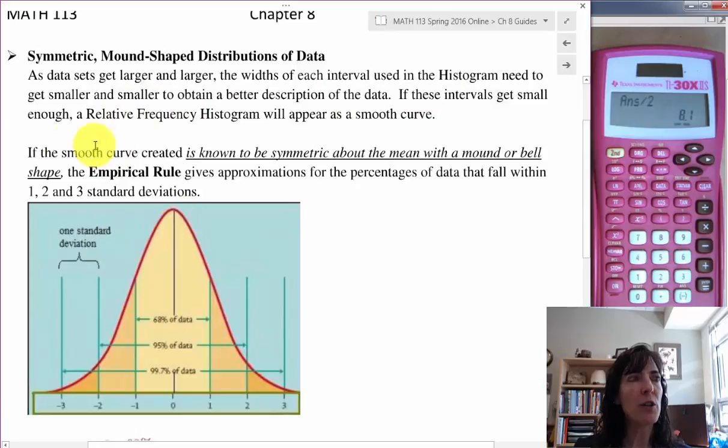It'll eventually look smooth. If this smooth curve is known to be symmetric, where you have the mean, median, and mode all co-located, all three of them together right there at the center, and the shape looks sort of like this, we think it will be a mound or a bell shape.